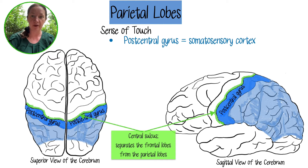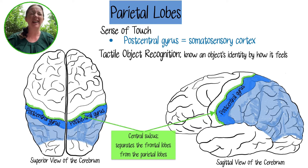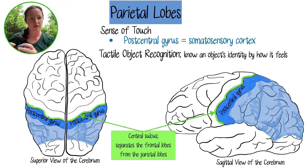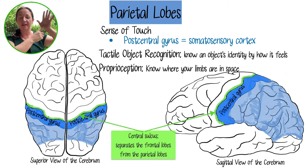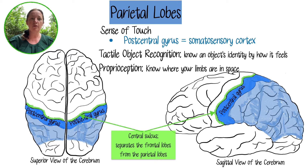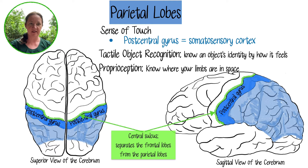The parietal lobes are also important in tactile object recognition — knowing what an object is even without seeing it. For example, if it were dark and I felt my sunglasses, I'd still recognize them. You have the ability to map the geometry of a structure in the parietal lobe. It's also responsible for proprioception — knowing where your limbs are in space. Even with eyes closed, you know where your hand is. Your ligaments, tendons, and muscles send sensory signals up to the brain, and the brain interprets muscle contraction to determine limb position. It's quite complex but also very cool.